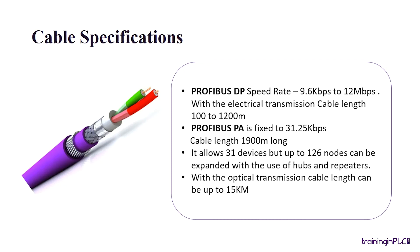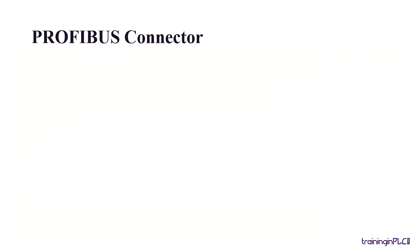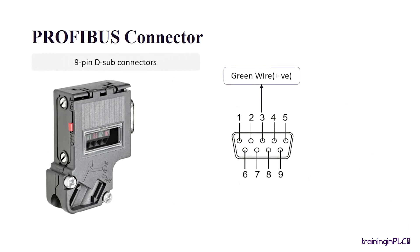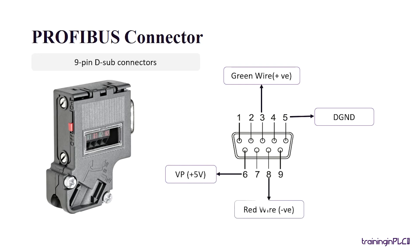Let's see the PROFIBUS connector. It's a 9-pin sub-D connector type. Pin number 3 is a positive line, and the PROFIBUS green wire will be connected. Pin number 5 will be connected to ground. Pin number 6 is a positive power line, usually plus 5 volts will be connected. Pin number 8 is a negative line, and the PROFIBUS red wire will be connected.